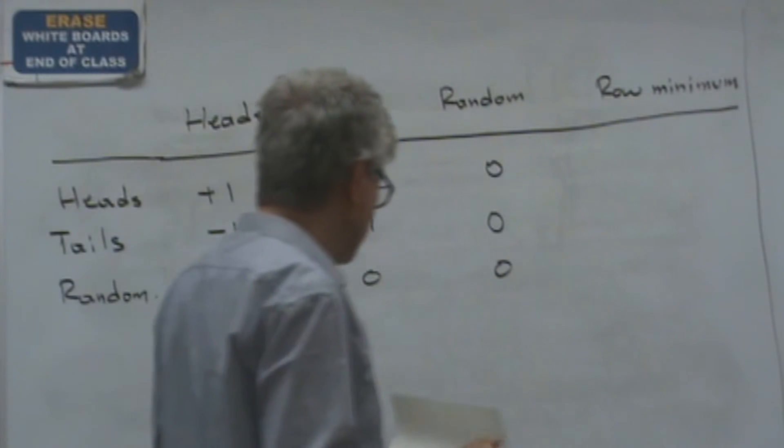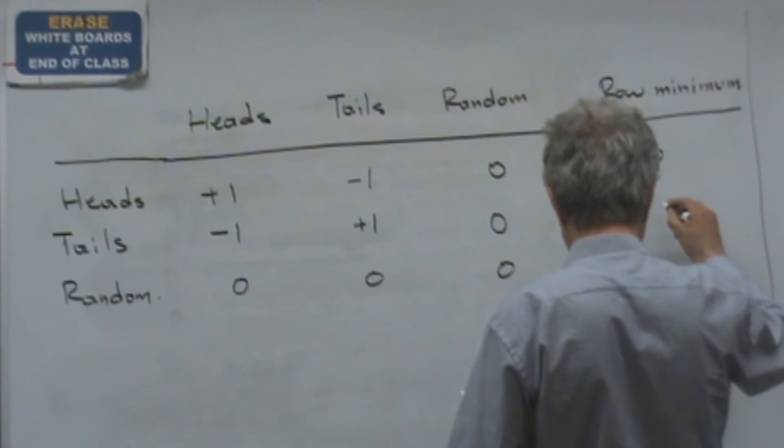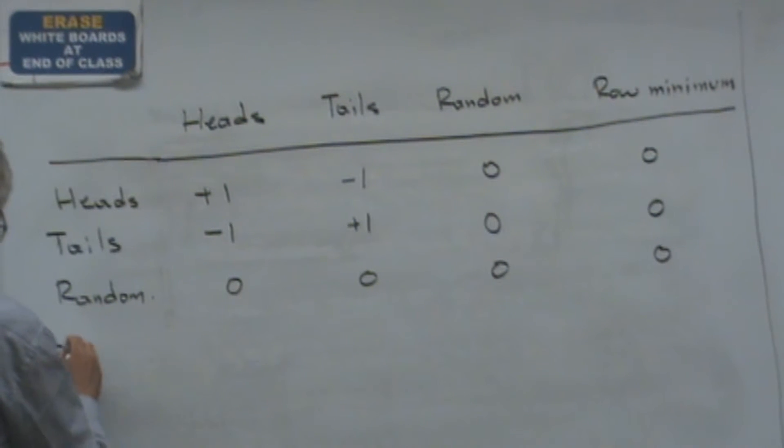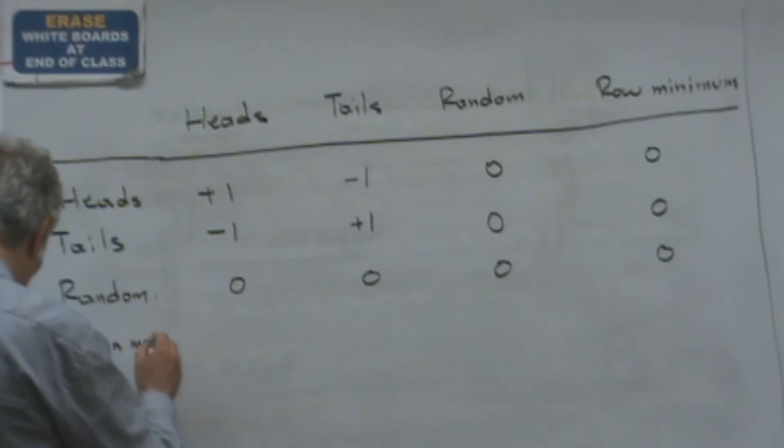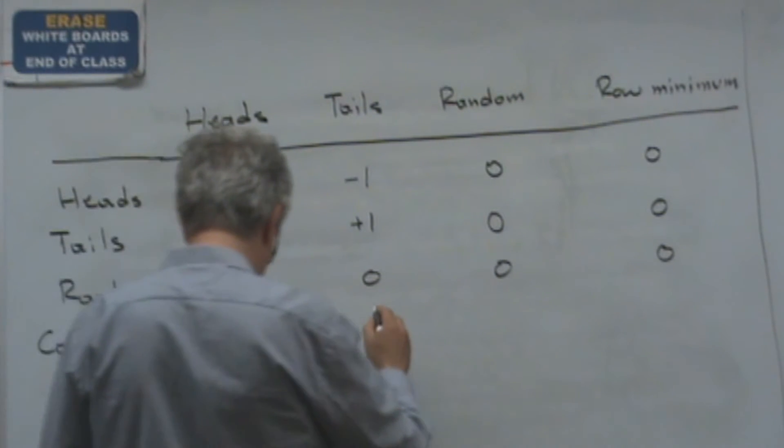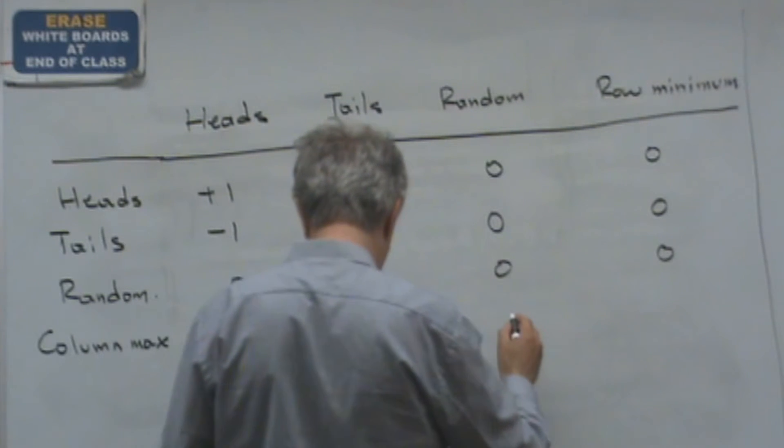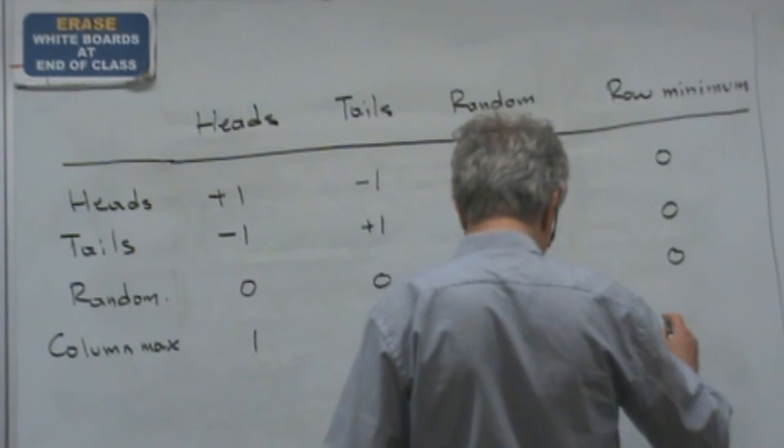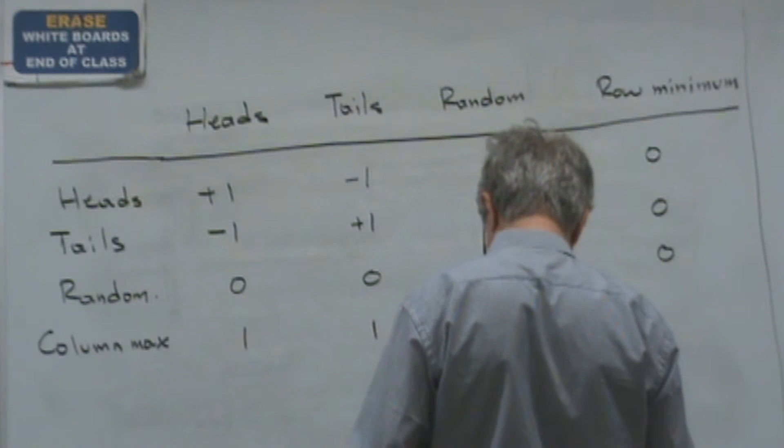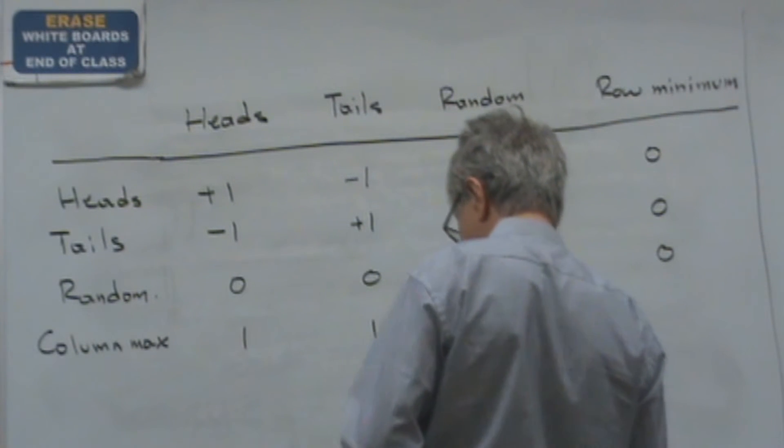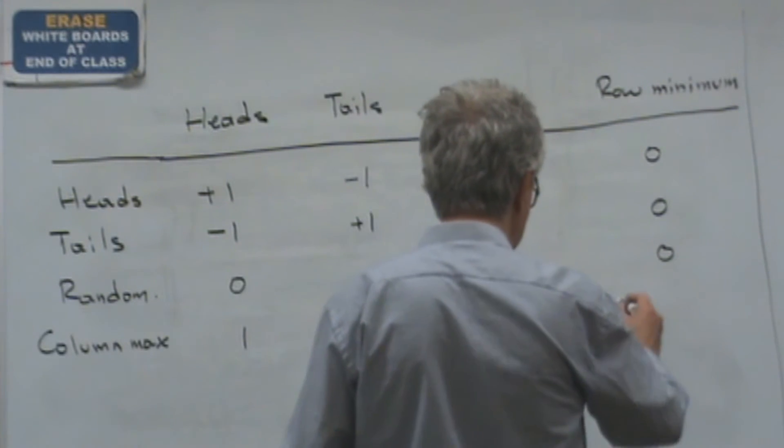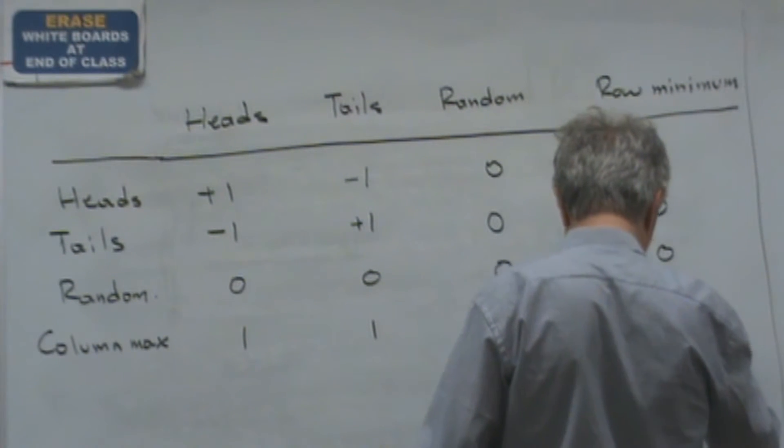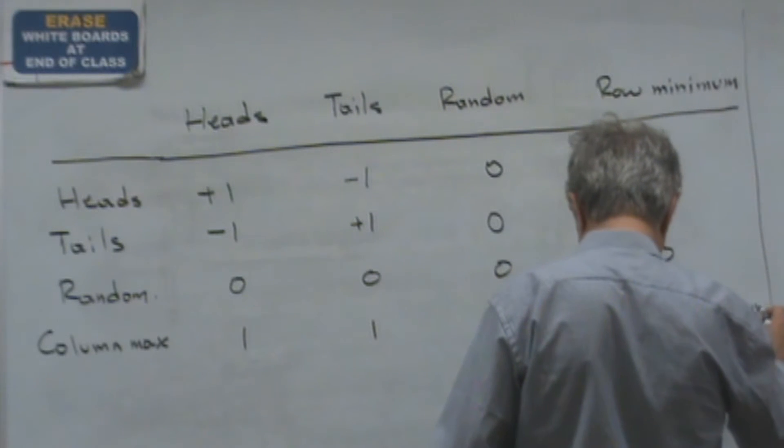So the row minimum, the row minima are zero, zero, zero. And the column maxima are one, one, zero. And the column maximum is zero.